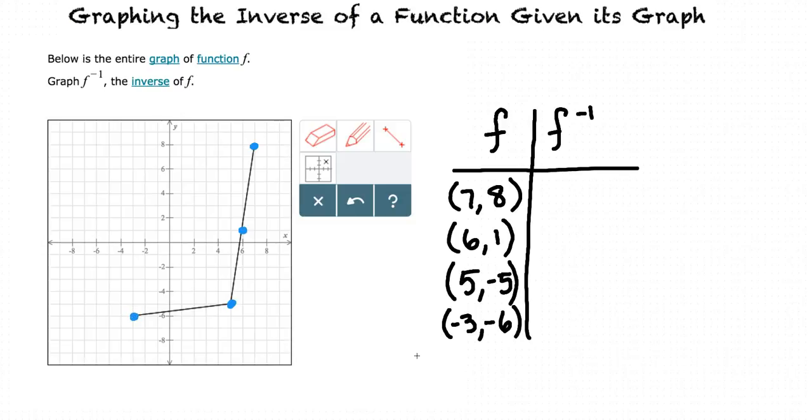By using these points, we can find points for our inverse as well. For example, by using the point (7, 8) in the original function, we know that the inverse of f has a point at (8, 7).